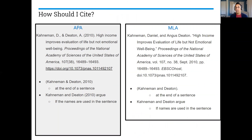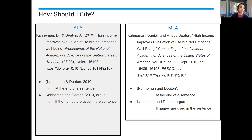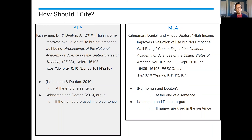There's really no set way for you to cite. Most of you are probably using either APA or MLA. Whatever your teacher has taught you to use, please continue to use that. You are not penalized for using one or the other — just don't mix them up. If you're using APA, make sure you're using APA. If you're using MLA, make sure you're using MLA. You can see on the screen that there are many similarities. We have two separate citations for the same source, our Kahneman and Deaton source, showing how it would look in APA references or an MLA works cited.